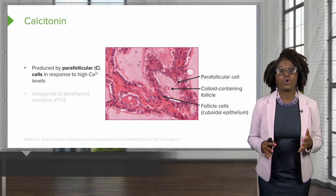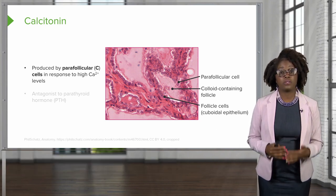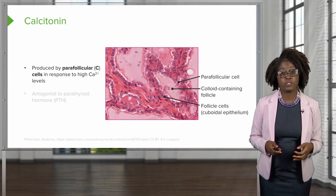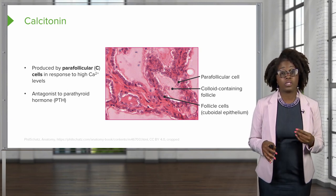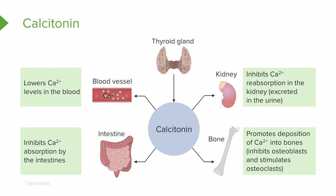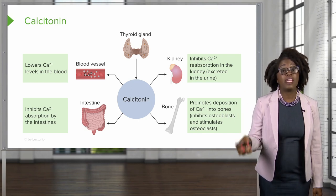The other hormone released by the thyroid is calcitonin, produced by the parafollicular cells in response to high blood calcium levels. It is the antagonist to parathyroid hormone. There is no known physiological role in humans at normal levels, but at higher-than-normal doses, calcitonin inhibits osteoclast activity in bone, prevents calcium release from the bone matrix, and stimulates calcium uptake and incorporation into the bone matrix.